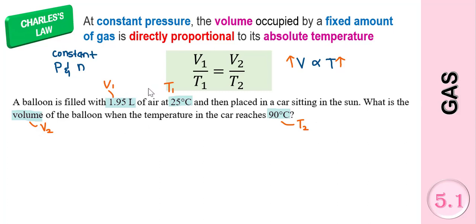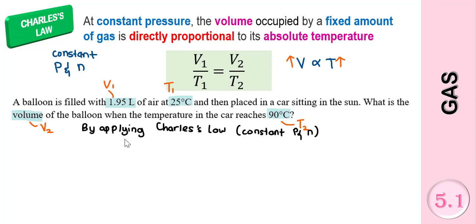Just like Boyle's Law, it doesn't matter whether you label it V1 or V2, as long as the temperature pair is correct. Since the question does not mention pressure or the amount of gas, we know that pressure and amount of gas are fixed — they are constant. So we apply Charles' Law for constant pressure and amount of gas. We have the formula: V1 over T1 equals V2 over T2. Bear in mind, since in this chapter we use absolute temperature, the temperature must always be in Kelvin, so you must convert the temperature into Kelvin.